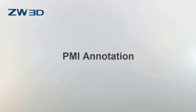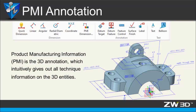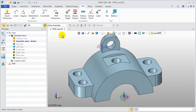PMI Annotation. ZW3D 2016 provides a whole new 3D annotation named PMI, Product Manufacturing Information. This is the PMI ribbon toolbar. Designers can create 3D dimensions or annotations on a model, and they will be listed in the View Manager.